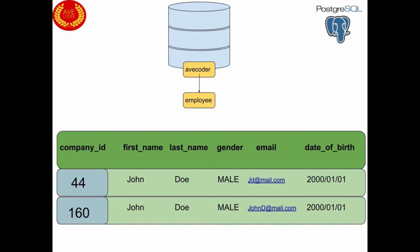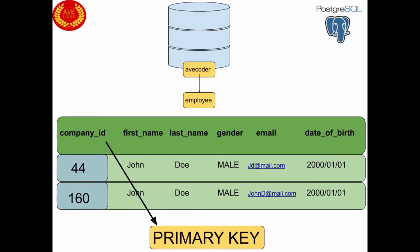To avoid any further confusion we want to introduce a parameter that will make the record unique. For instance, it can be a company ID attached to all employees, and this company ID is going to be unique. We can introduce a constraint called the primary key, which will make sure that any record will only have this unique ID present.